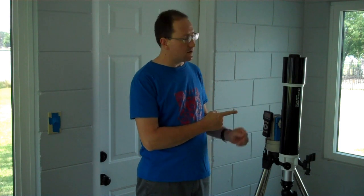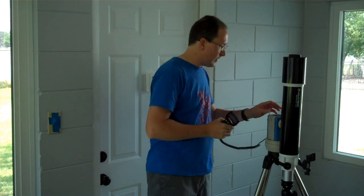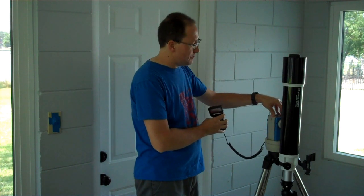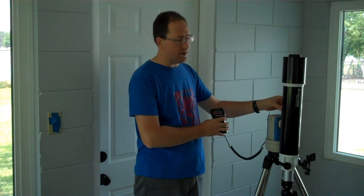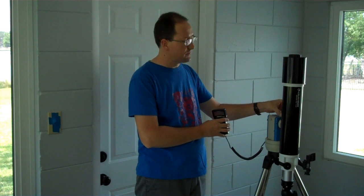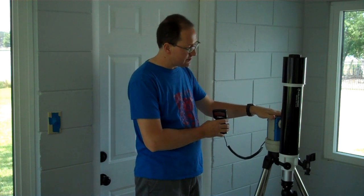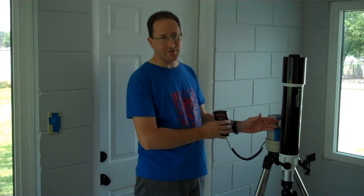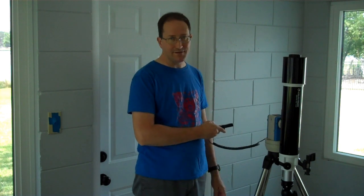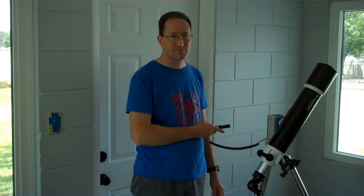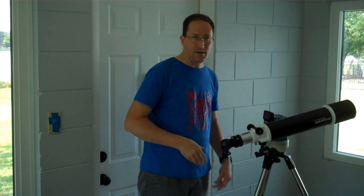This is a Celestron Omni AZ 102 millimeter refractor telescope. I have it mounted on my Ioptron cube. Now this telescope has a Vixen-style CG-5 dovetail mounted on its right side. Unfortunately, the mount has this thing expecting it on the left and so what that means is that the telescope is upside down.